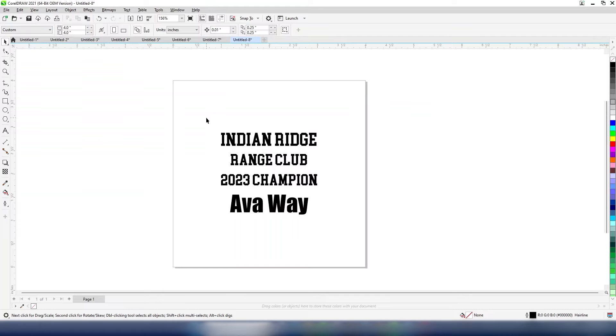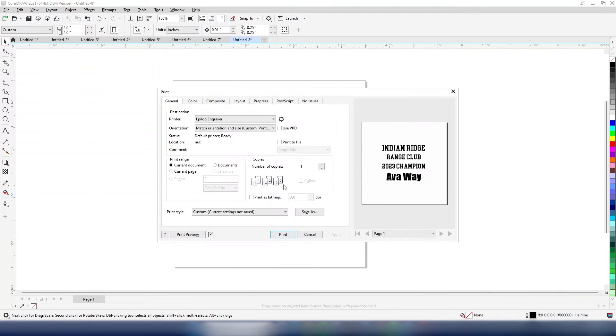I'm going to do some manipulation of the graphic in our software. So I've just got it generally set up how I want it to look on that tumbler. And so now just go to file and print, and then I'm going to print to the epilogue engraver.